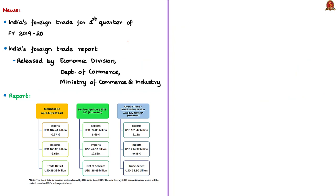The news article presents the values of India's foreign trade for the first quarter of the financial year 2019-20. The report of India's foreign trade is released by the economic division of the department of commerce, which comes under the ministry of commerce and industry. As per the report, India's overall exports in April to July FY2019-20, including both merchandise and services, showed a positive growth of around 3.13% compared to April-July FY2018-19. Overall imports in the same period showed a negative growth of minus 0.45%.